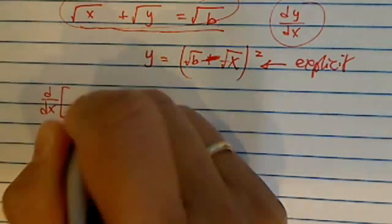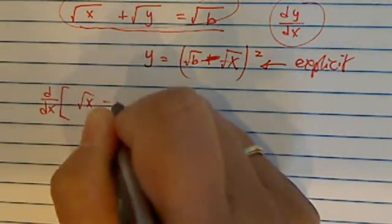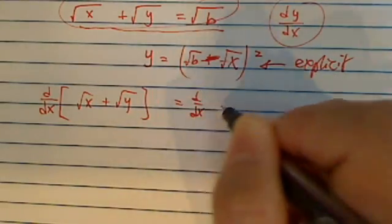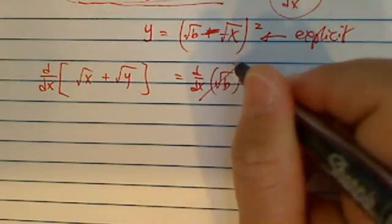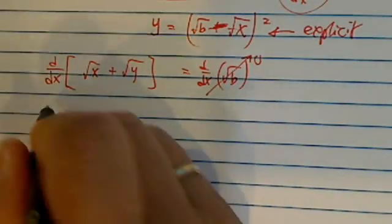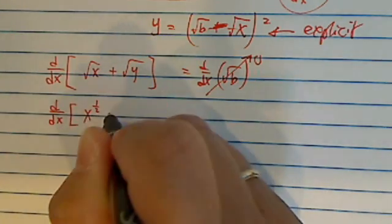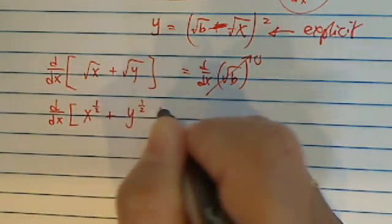How we do this one is we're going to take derivative of the left hand side, let's write it out, and derivative of right hand side. This side of course goes to zero because it's a constant. Now on this side we have some tricks to do here. Let's put it into the exponential form to make it easier.